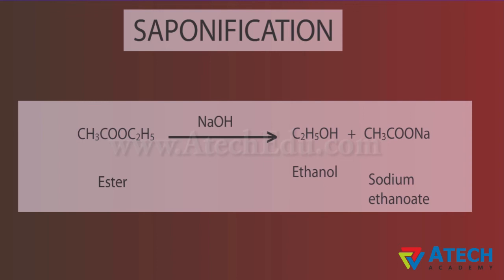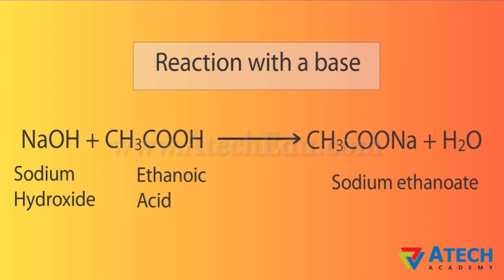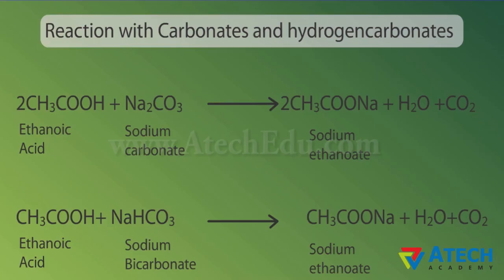Like mineral acids, ethanoic acid reacts with a base such as sodium hydroxide to give a salt, sodium ethanoate or commonly called sodium acetate and water. Ethanoic acid reacts with carbonates and hydrogen carbonates to give rise to a salt, carbon dioxide and water. The salt produced is sodium ethanoate, commonly called sodium acetate.